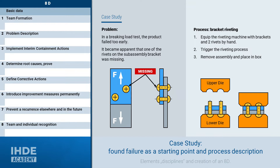And so we come to the case study. What we see here is a sub-assembly of a product. These two steel brackets are connected to each other with two rivets. This riveted connection must be able to transmit a certain amount of force. During a braking load test of the product, the required braking load was not met and the rivet connection was destroyed. An analysis revealed that one of the two rivets was missing.